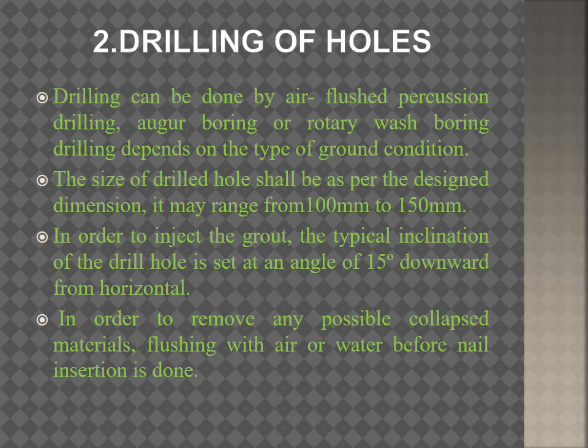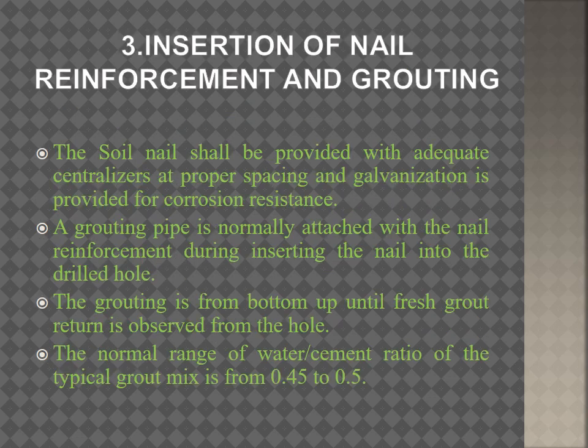For removing possible collapsed materials, air flushing or water flushing is done during this stage. The holes are drilled to a particular length, and the drilling method — whether air flush percussion drilling, auger boring, or rotary wash boring — depends on the type of ground condition.